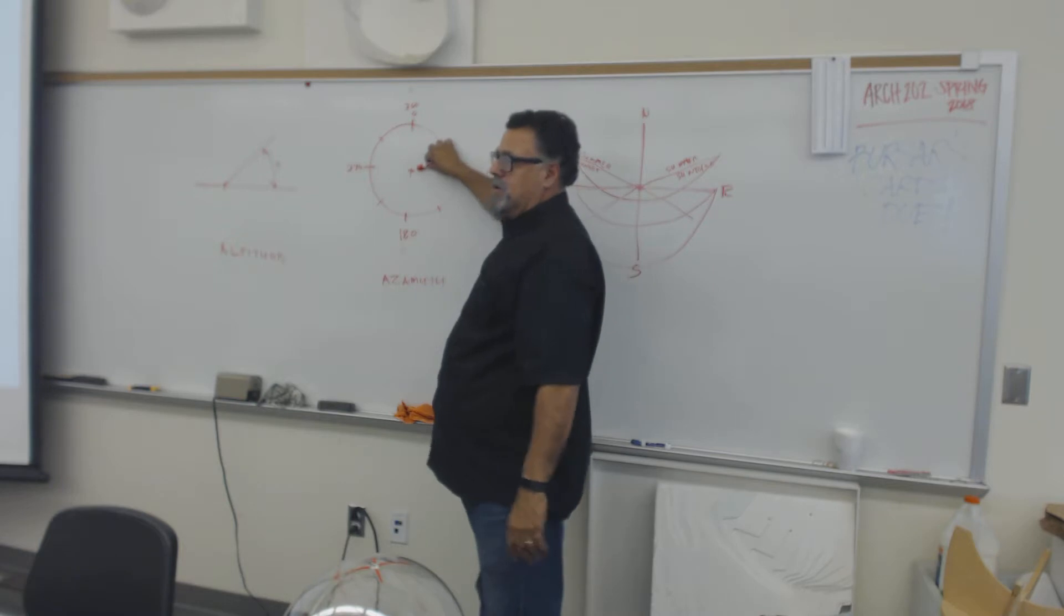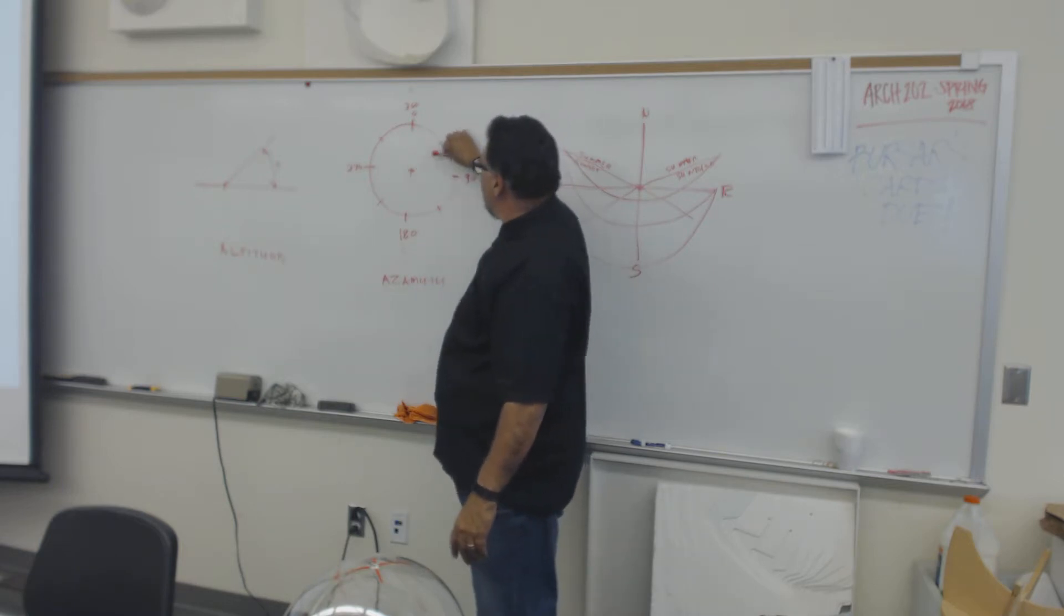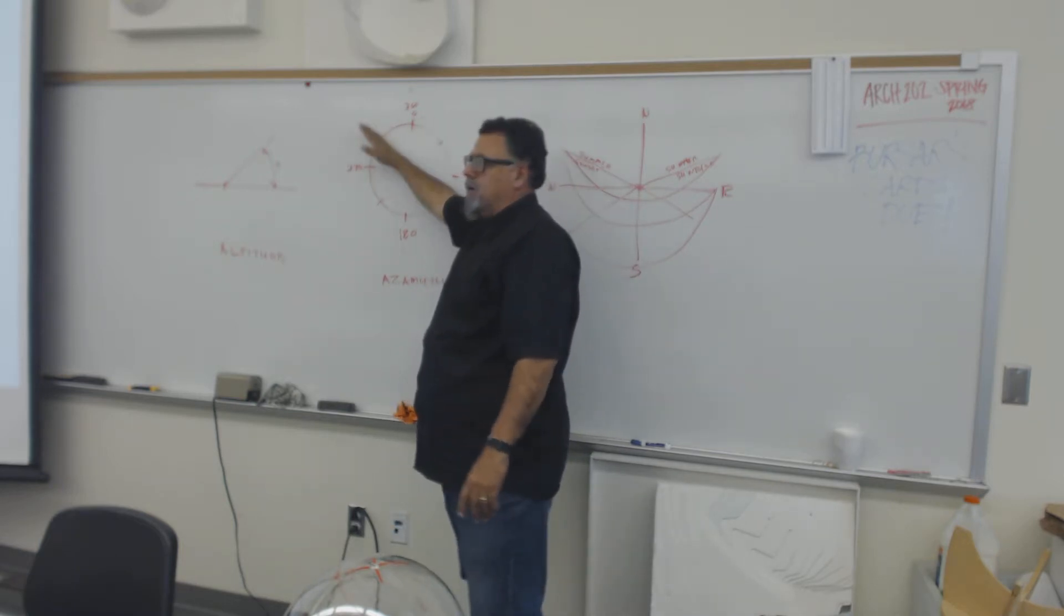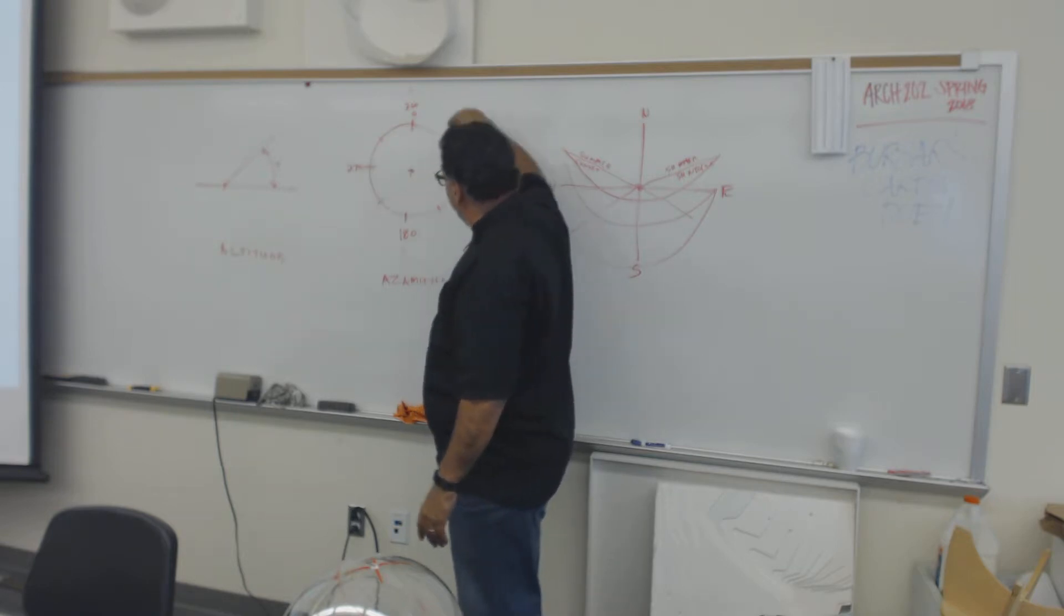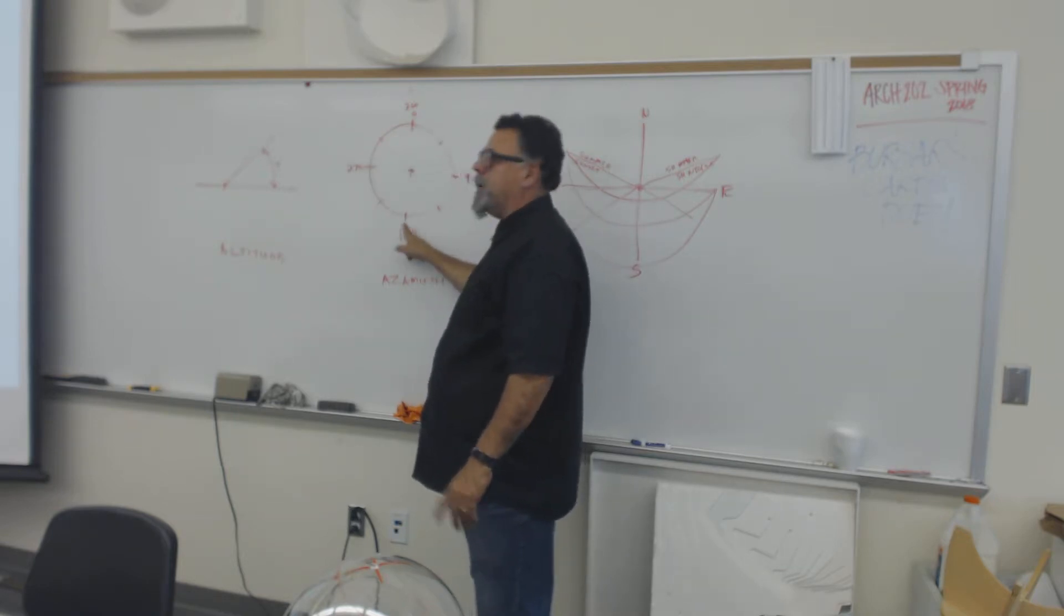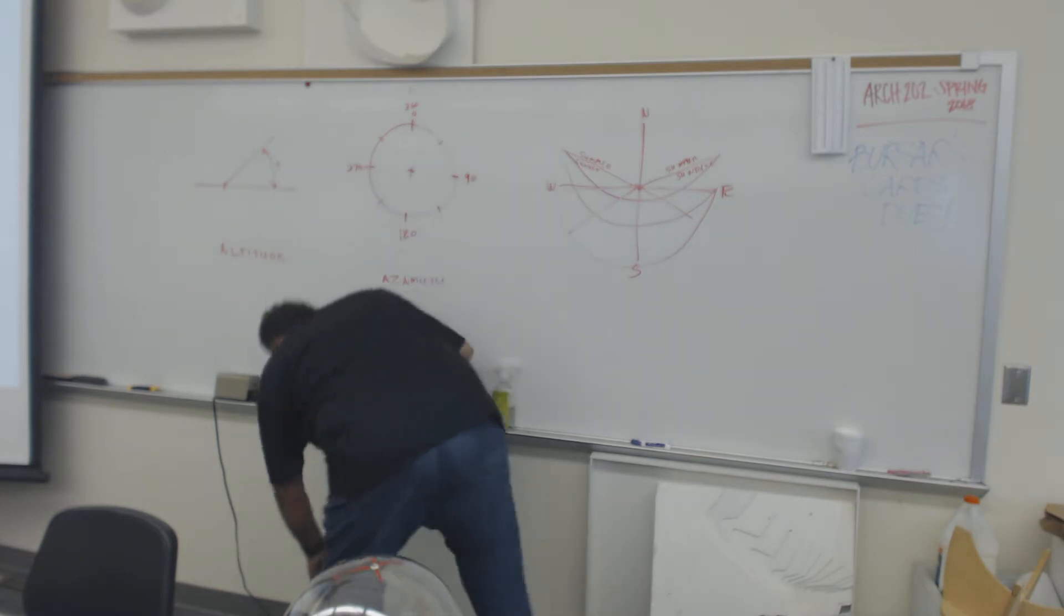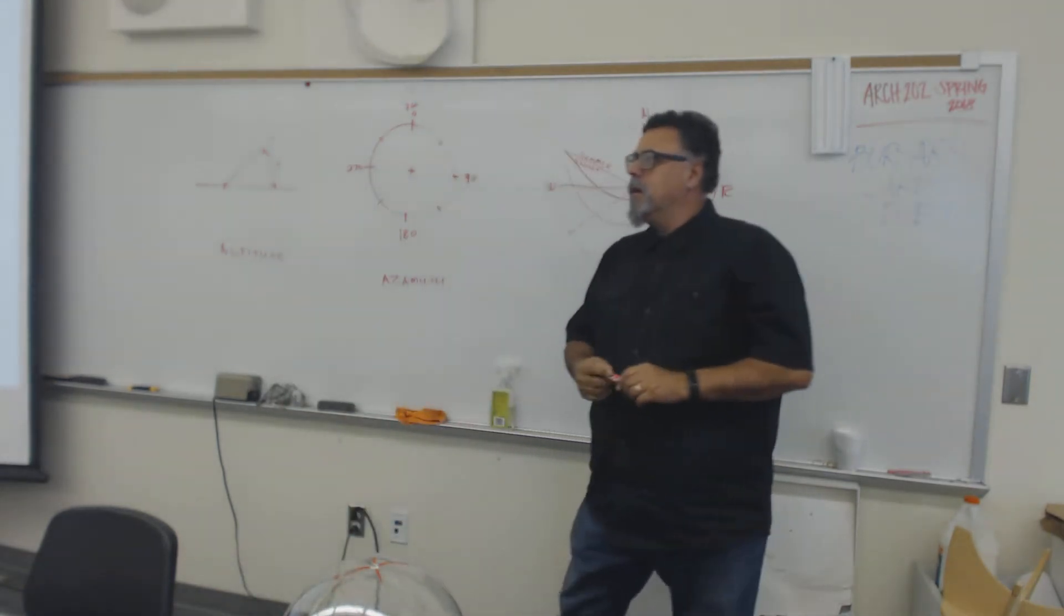It's symmetrical. If the sun rises here, it sets over there. So if it rises there, it sets there. Solar noon is halfway in between. And so it's always, at solar noon, going to be at 180 degrees.